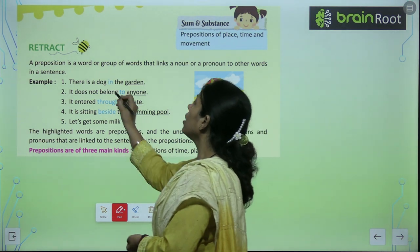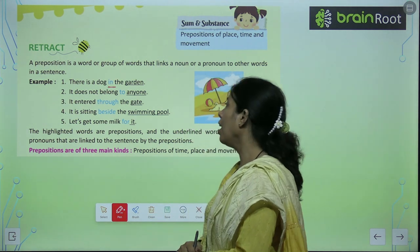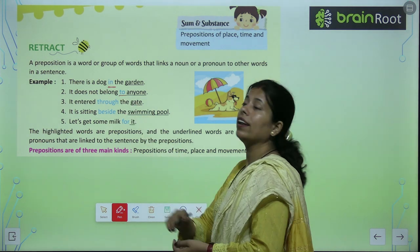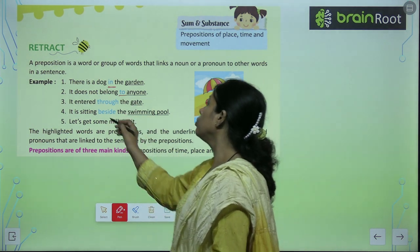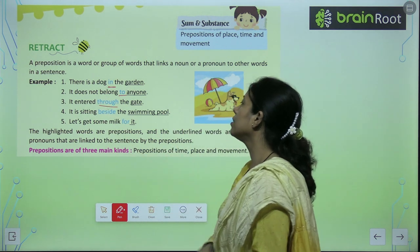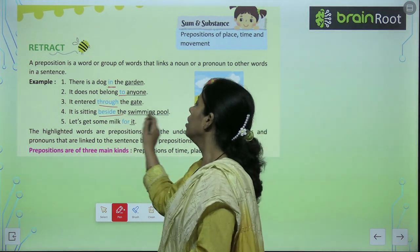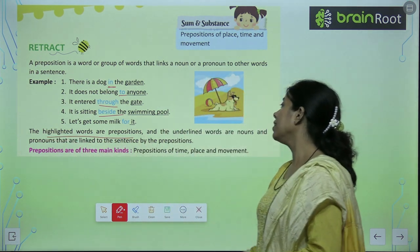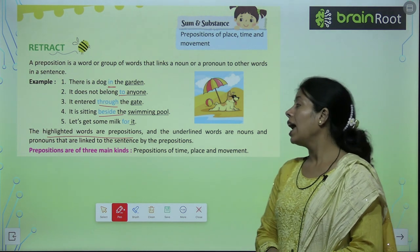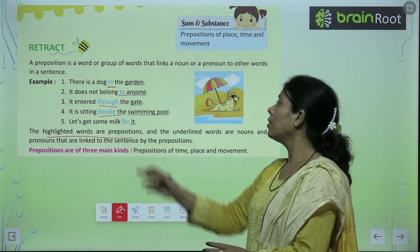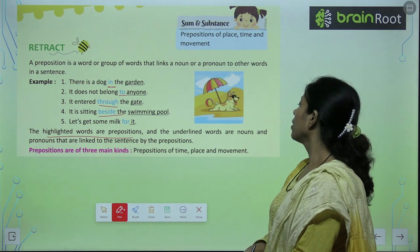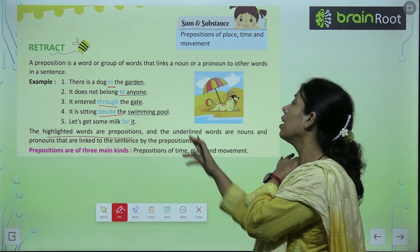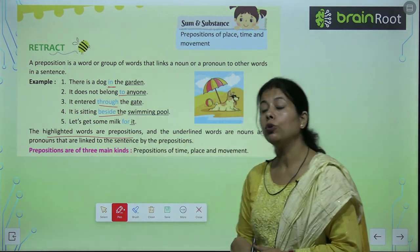For example: 'There is a dog in the garden.' Kahan hai? Garden ke andar hai dog. It does not belong to anyone. It entered through the gate. It is sitting beside the swimming pool. The highlighted words are prepositions here, and the underlined words are nouns and pronouns.